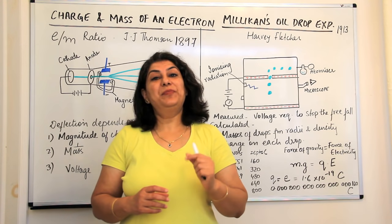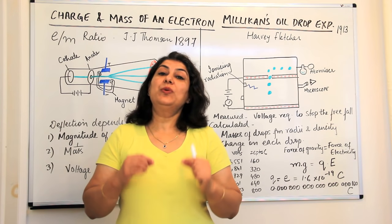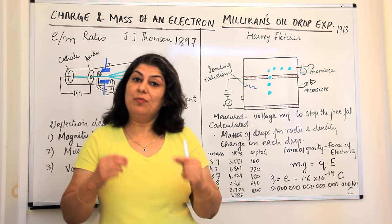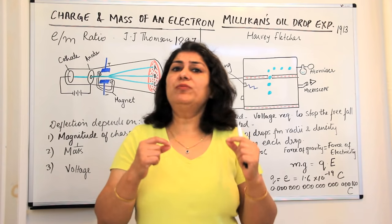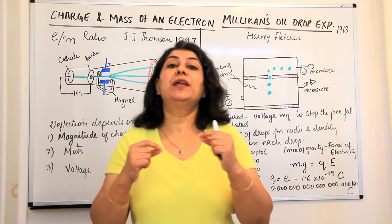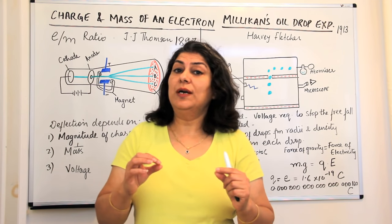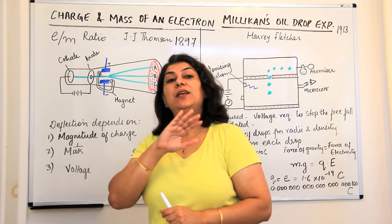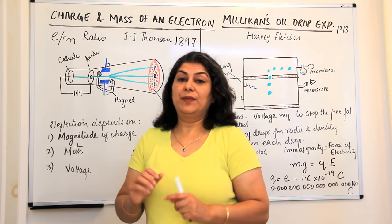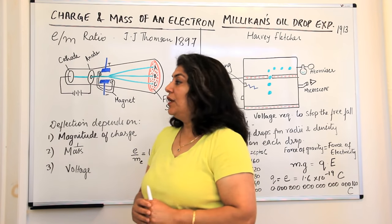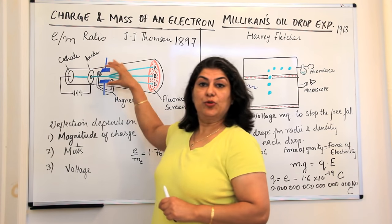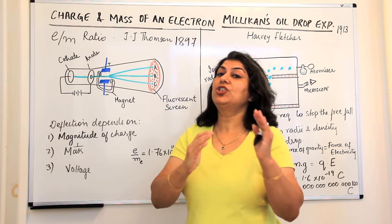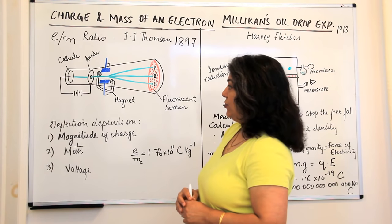In the previous video I told you how Thomson discovered an electron. Now moving on with that story, Thomson wanted to know the charge and mass of an electron. He knew that electrons are negatively charged particles and that they are present in all atoms, that is, in all matter. He again took the cathode ray tube and carried out this experiment to find out the charge and mass of an electron.